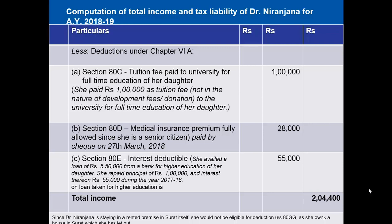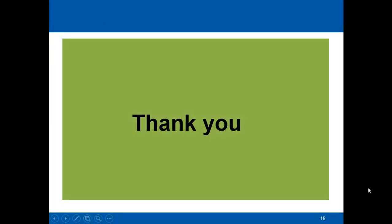After all Chapter VI-A deductions, her total income comes to rupees 2 lakh 4 thousand 400. Note that Dr. Niranjana is staying in a rented premises in Surat itself; however, she is not eligible for deduction under section 80GG since she owns a house in Surat which she has let out. Thank you.